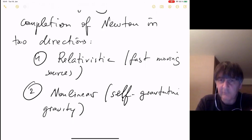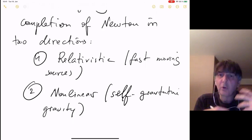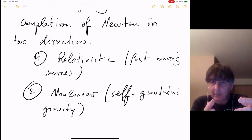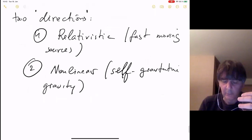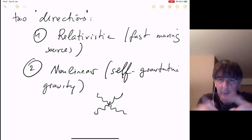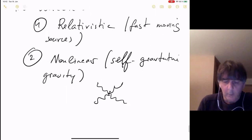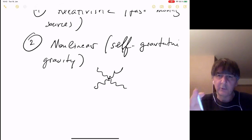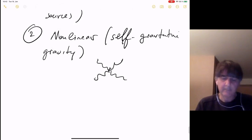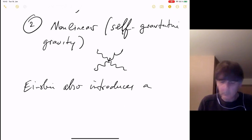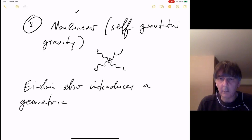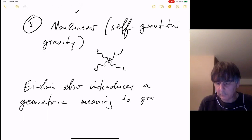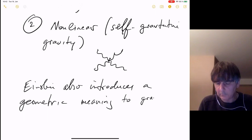Einstein also introduces a geometric meaning or interpretation to gravity: gravity is a dynamical metric. There is a metric tensor g_μν, and this metric tensor is not some fixed universal constant but is a field. From a particle physicist's perspective, gravity around any background — for example, flat Minkowski — is a fluctuation of the gravitational field, and these fluctuations are excitations of the graviton.